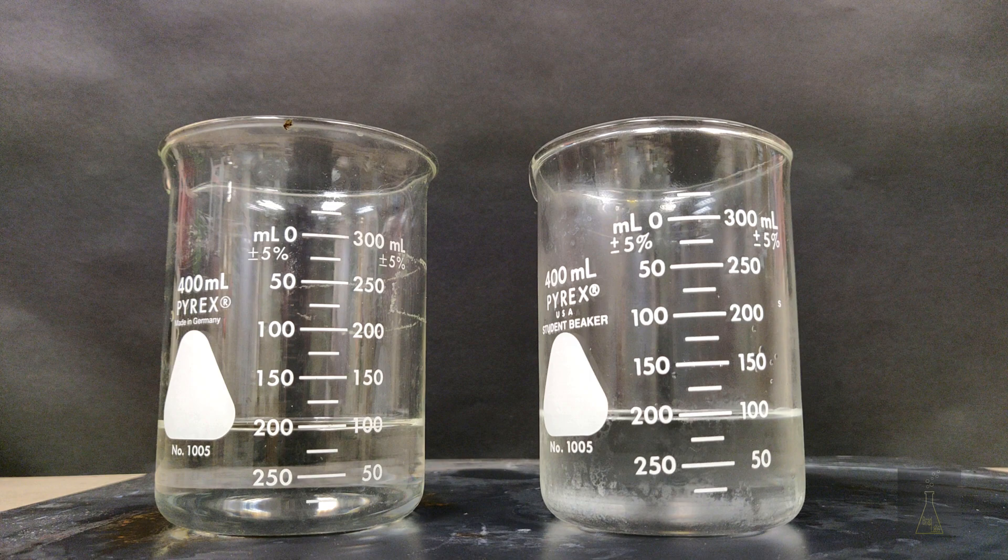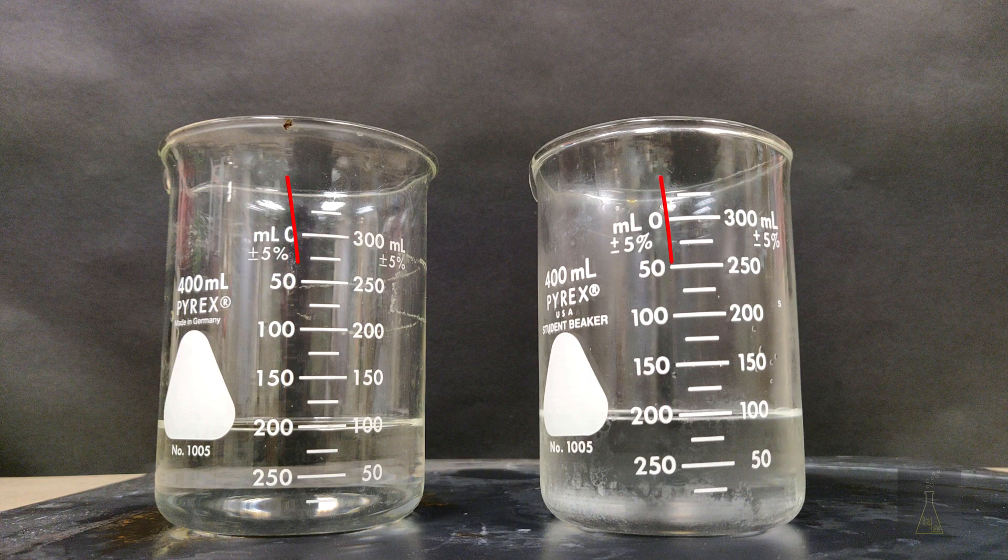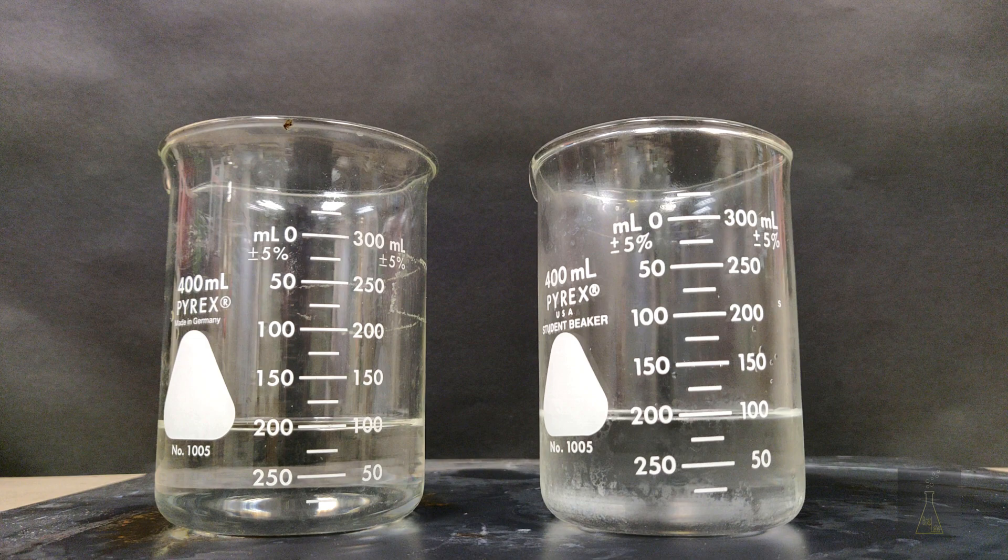So instead of saying, let's measure the amount of time it takes for the baking soda and vinegar to completely react, I could say, let's measure the amount of time that it takes the baking soda and vinegar to reach a certain point in the beaker, and maybe even fall to a certain point. For example, we could measure how long it takes each to reach 250 milliliters. Then we can take a second measurement to see how long it takes that baking soda and vinegar to fall to 125 milliliters.